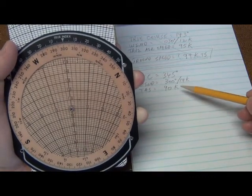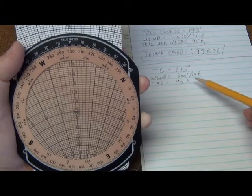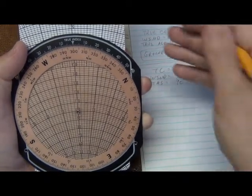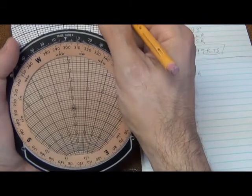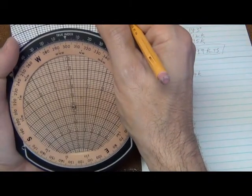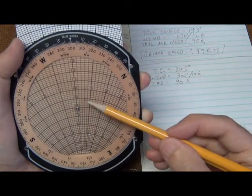we look at our final bit of information in the given information, which is the true airspeed. And here it's 90 knots. So we want to slide the card so that that dot is right on top of the 90 knot arc. So now the dot is on top of the 90 knot arc.